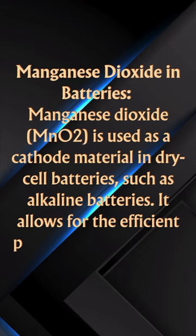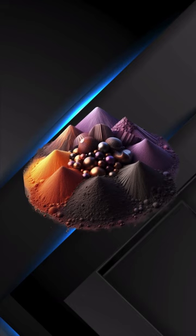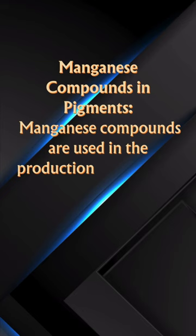Manganese compounds and pigments. Manganese compounds are used in the production of pigments for ceramics, paints, and inks. Manganese oxide is known for creating brown, black, and purple colors.